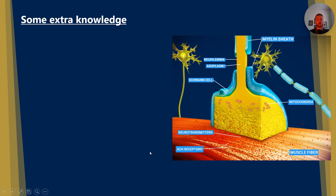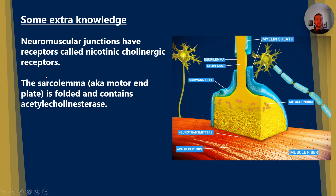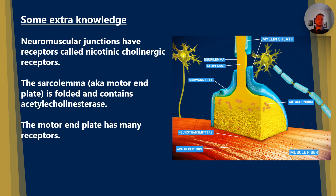Some extra knowledge on neuromuscular junctions: neuromuscular junctions have receptors called nicotinic cholinergic receptors. The sarcolemma, which is the cell membrane of the muscle, is folded and contains the enzyme acetylcholinesterase — that's the enzyme that catalyses the breakdown or hydrolysis of acetylcholine. The motor end plate has many receptors.